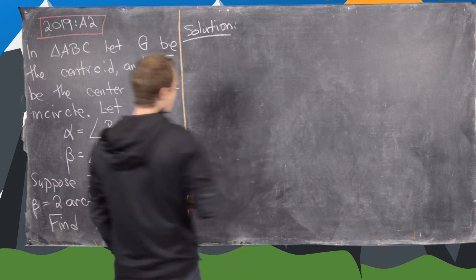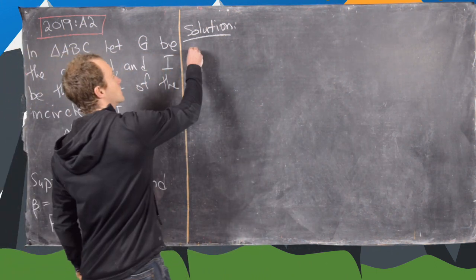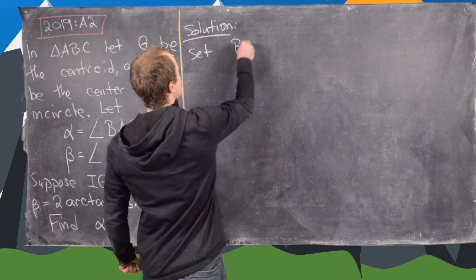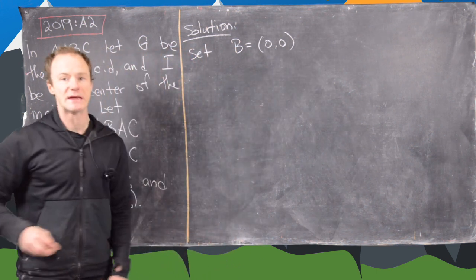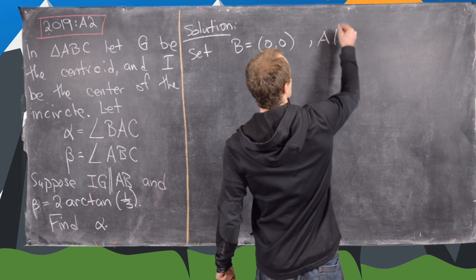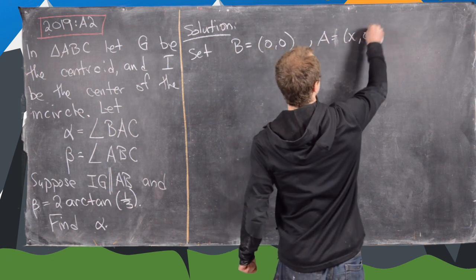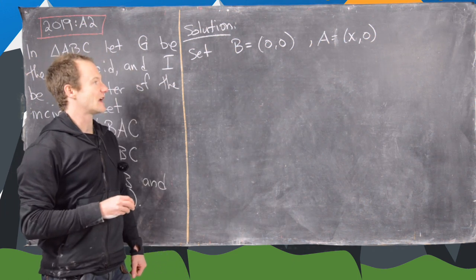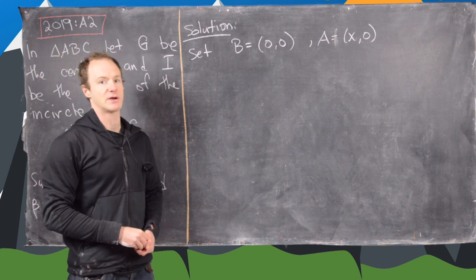The setup we're going to use is to put all of this in the coordinate plane. We set B equal to (0,0) so B is at the origin, and then we put A equal to (x, 0) so that's along the x-axis, and then everything else will work out from there and we'll arrive at the following picture.